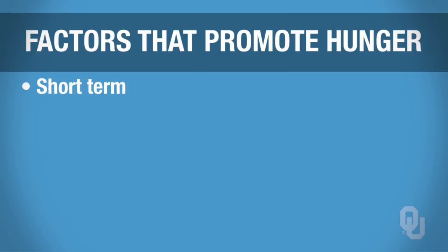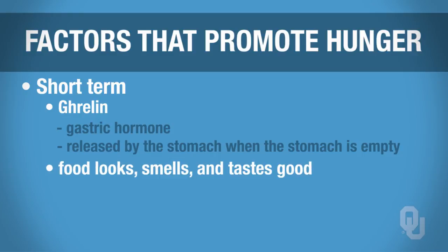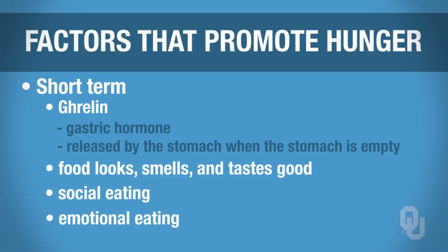For short-term regulation of feeding behavior, the hormone ghrelin is key. Ghrelin is a gastric hormone released by the stomach when the stomach is empty. Other short-term factors that cause feeding behavior include food smelling good, tasting good, looking good, and the social aspects of eating.